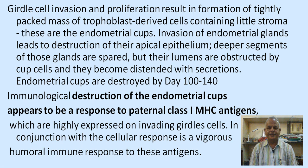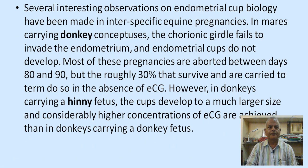Endometrial cups are destroyed by day 100 to 140. Immunological destruction of the endometrial cups appears to be a response to paternal class 1 major histocompatibility antigens highly expressed on invading girdle cells. In conjunction with the cellular response, there is a vigorous humoral immune response to these antigens. In interspecific equine pregnancies, in mares carrying donkey conceptuses, the chorionic girdle fails to invade the endometrium and endometrial cups do not develop. Most such pregnancies abort between days 80 and 90, but the roughly 30 percent that survive are carried to term without ECG. In jennies carrying a horse fetus, the cups develop to a much larger size and considerably higher ECG concentrations are achieved than in jennies carrying a jenny fetus.